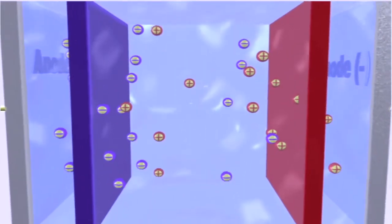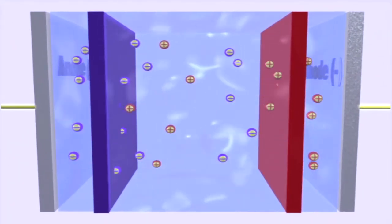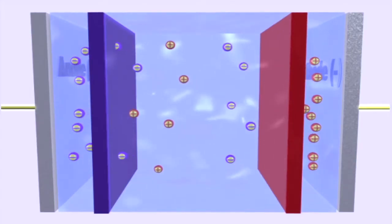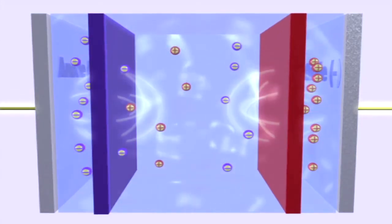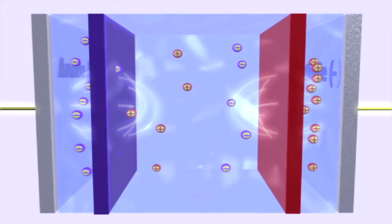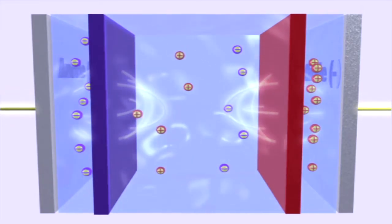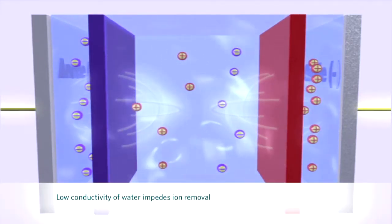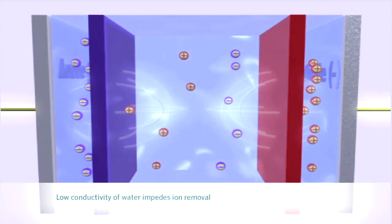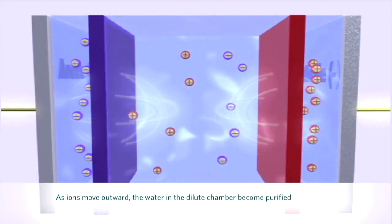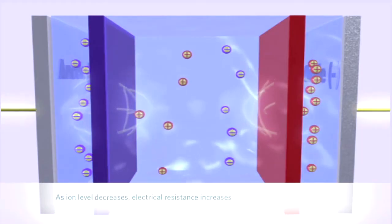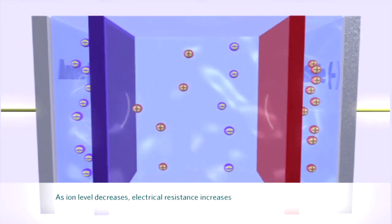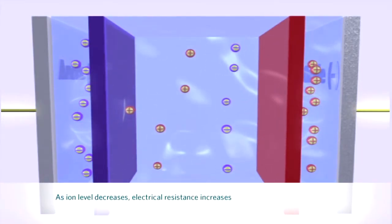This configuration of membranes and electrodes forms the framework of a CEDI module. This process is limited, however, by the slow speed at which ions move through water. In effect, the low conductivity of water impedes ion removal. In other words, as the product compartment water becomes more and more pure, the electrical resistance of this water increases and counters the effect of the electrical field.